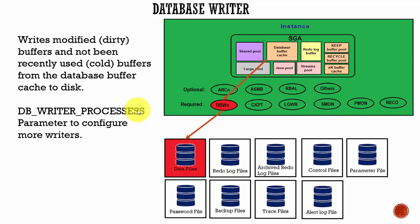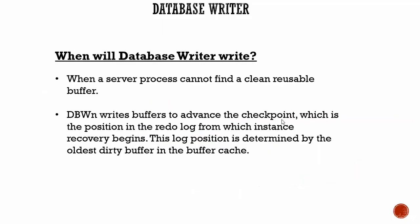The database writer is used to write dirty buffers and cold buffers from the database buffer cache into the data files. When will the database writer write? The database writer will write in two cases: one is whenever a server process cannot find a clean reusable buffer, and the second one is whenever the Oracle database wants to advance a checkpoint. A checkpoint is a position in the redo log from which the instance can recover. This log position is determined by the oldest dirty buffer in the buffer cache. Whenever the server process cannot find a clean reusable buffer, and whenever the Oracle database wants to advance the checkpoint, the database writer will write the dirty buffers and the cold buffers into the data files.